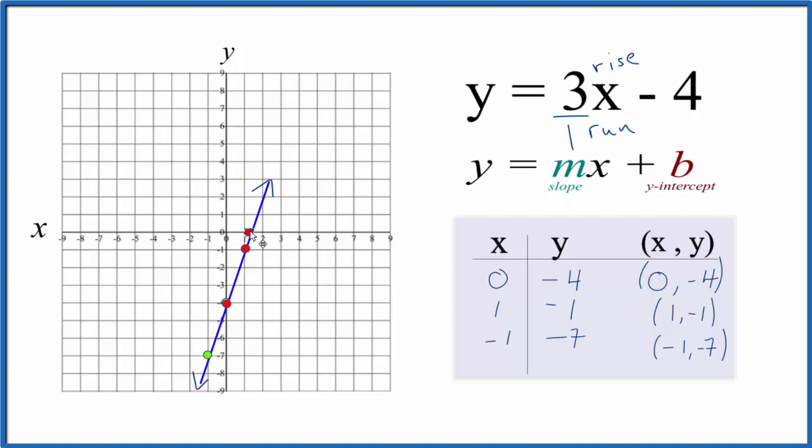From there we could rise 1, 2, 3, and go over 1. And all these points are on the line. Likewise, we could go in the opposite direction. Down 3, 1, 2, 3, and then over 1 in the opposite direction there. That's also on our line.